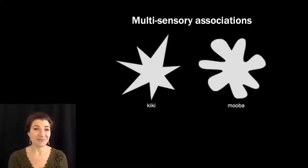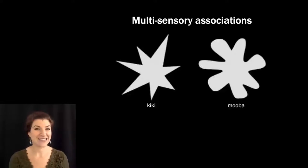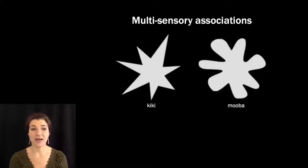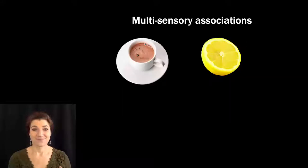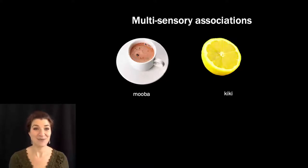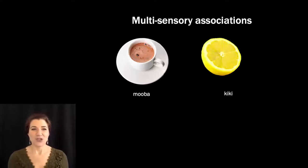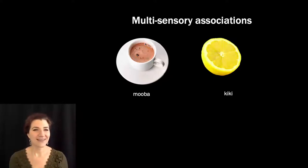So most people would label the spiky one kiki and the curvier one mooba. How come? Maybe you're thinking something like kiki is sharp and jagged and the sound kiki is like sharp and jagged. So maybe it's something about the shape of the objects. But let's get shape out of the picture. Which of these is kiki and which is mooba? Now they're both round. So most people would call the lemon kiki and the hot cocoa mooba. So sharp things are kiki and sour things are kiki.